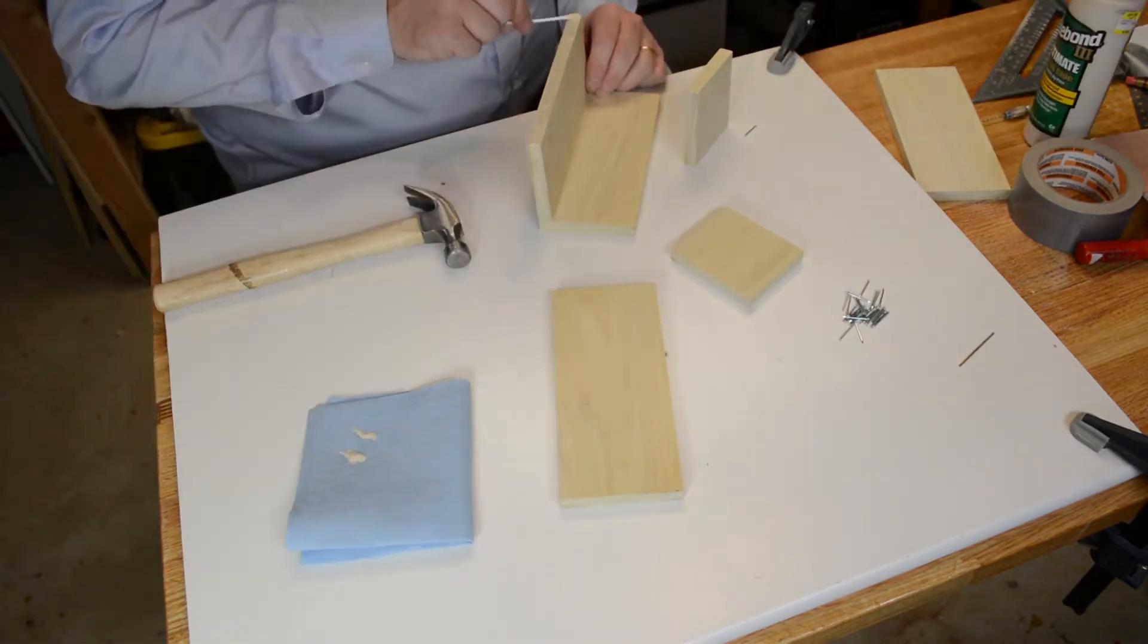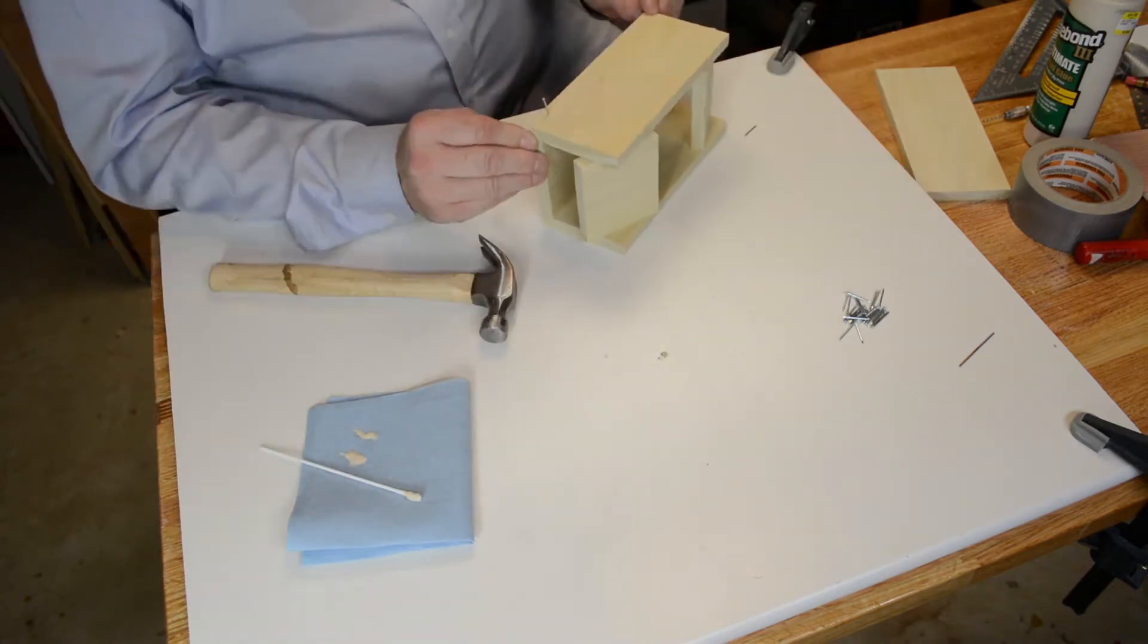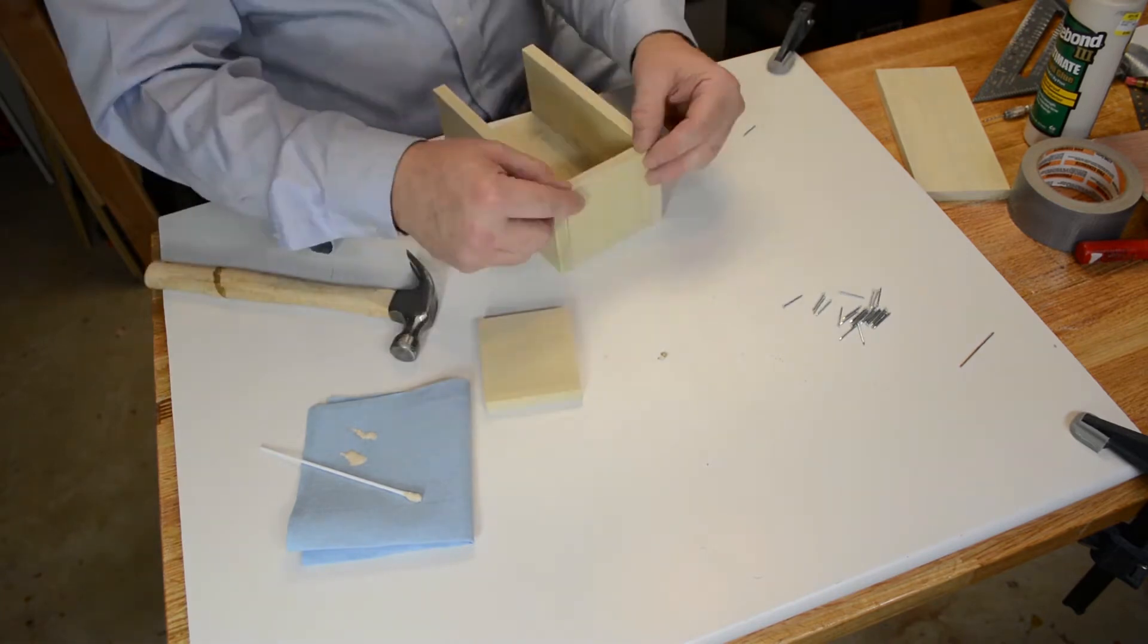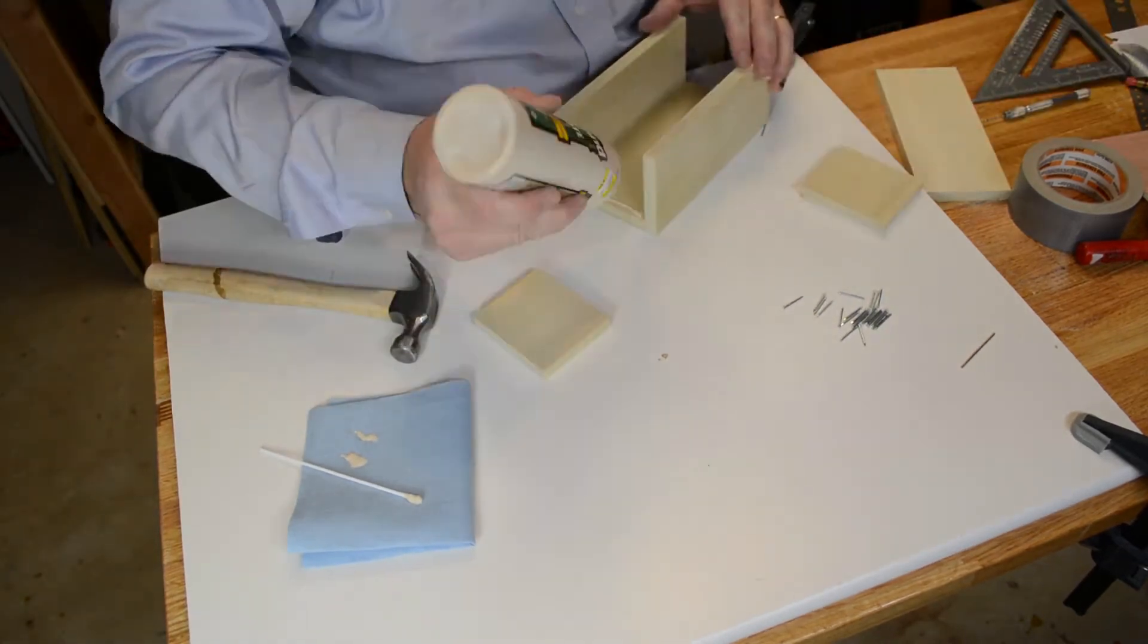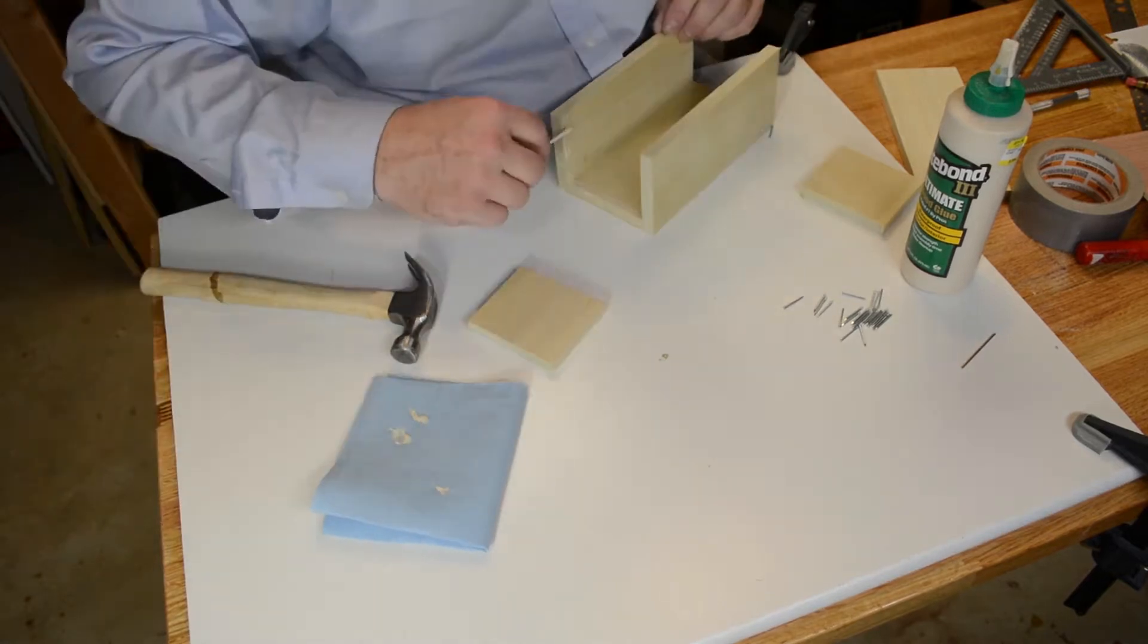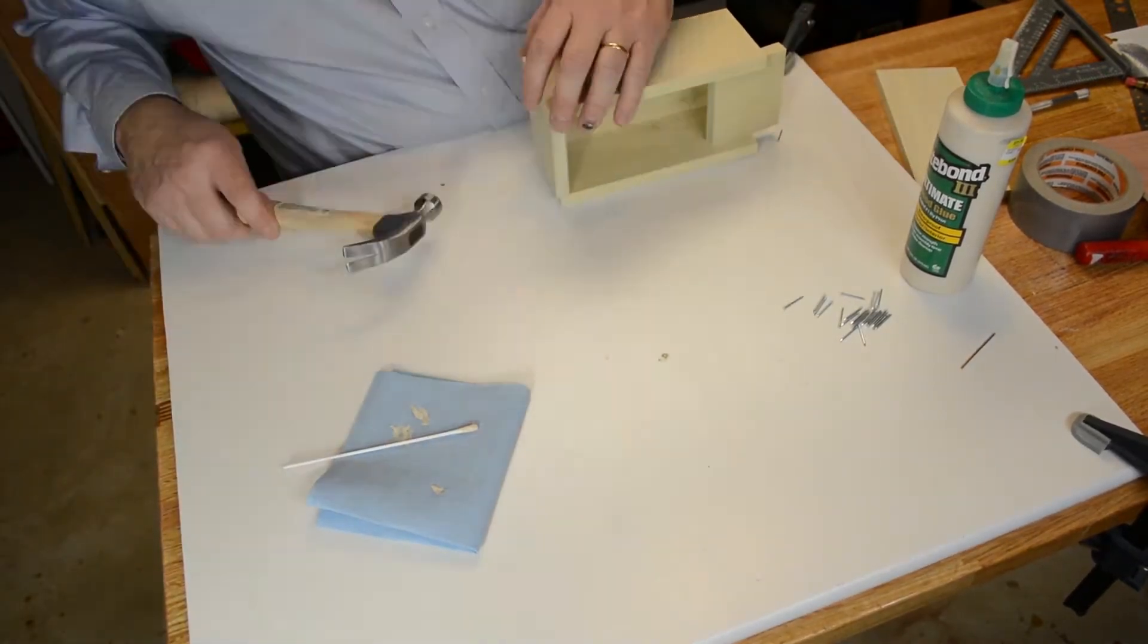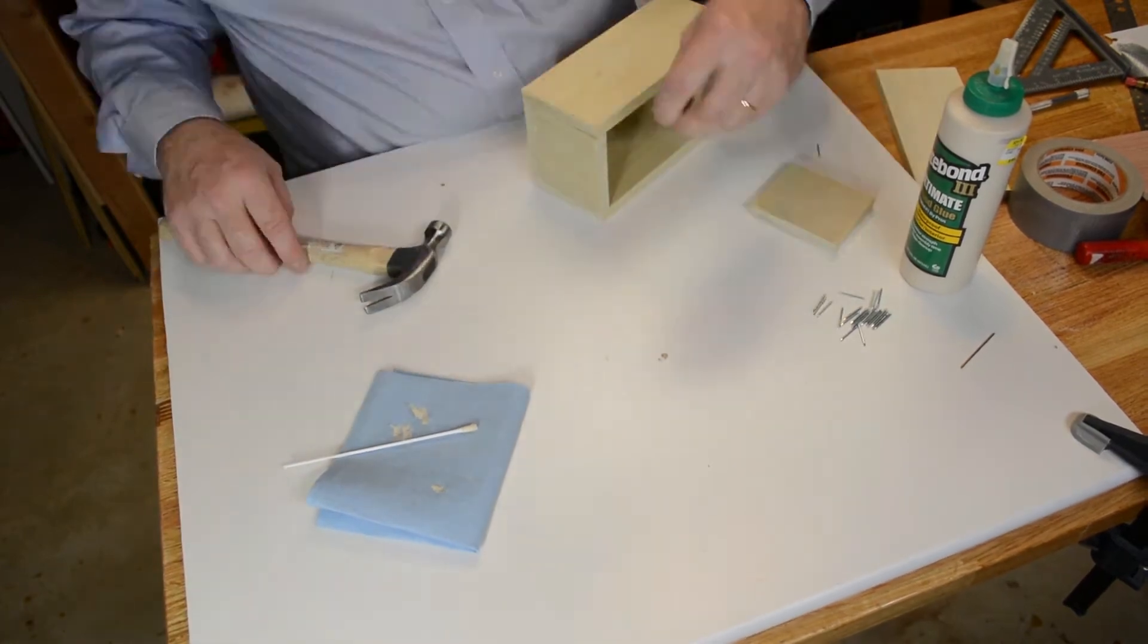And with poplar, because it's a softer product, if you've got the benefit of a drill and a tiny little drill bit, just want to pre drill those a little bit. And then your nails actually go in pretty clean. And you don't run much of a chance of splitting that wood.